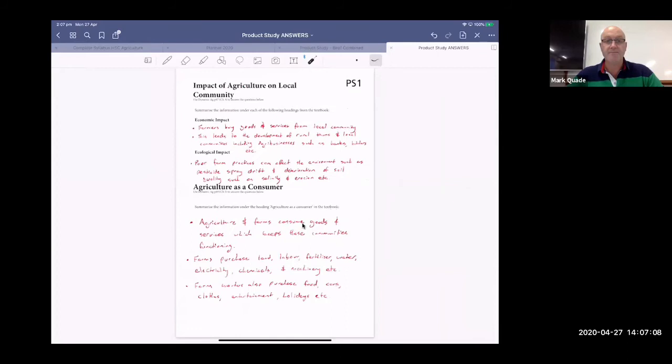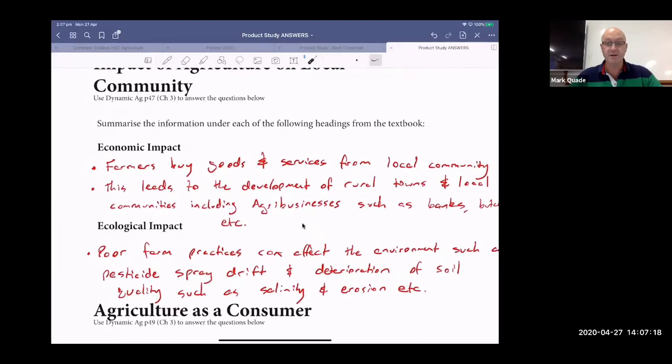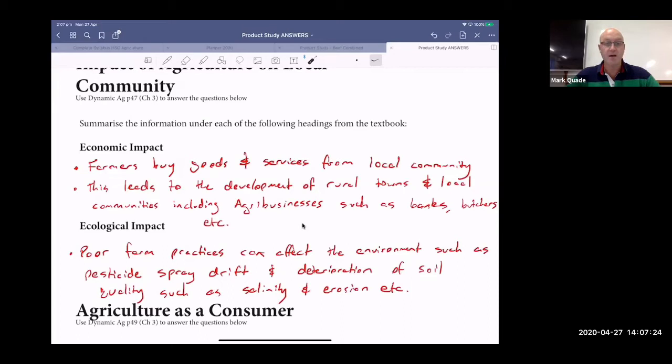Impact of ag on local community. This is page 47. Farmers buy goods and services from the local community. This leads to development of towns and local communities, including agribusinesses such as banks, butchers, et cetera. An agribusiness is just any business that gets money from agriculture. That was economic impact. Ecological impact: poor farm practices can affect the environment such as spray drift. We've talked about that in the cotton industry. And the deterioration of soil qualities such as salinity and erosion.